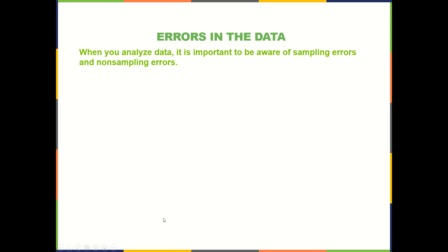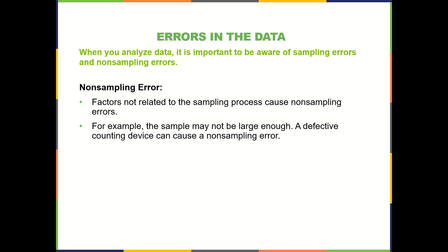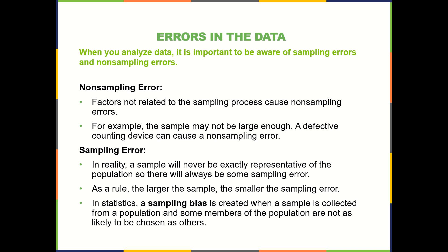We'll start with simple random, which is the best kind. But before we get into defining the types or methods of sampling, let's discuss what kind of errors you can have. You can have non-sampling error, which isn't related to the actual sampling method you're using — things like not having a large enough sample or using a defective device. We also have sampling error; in reality a sample will never be exactly representative of the population. There are no perfect samples, but as a rule the larger the sample the smaller the sampling error. Sampling bias is created when some members of the population are not as likely to be chosen as others — it's defined as a method where not every member has an equal chance of being part of the sample.